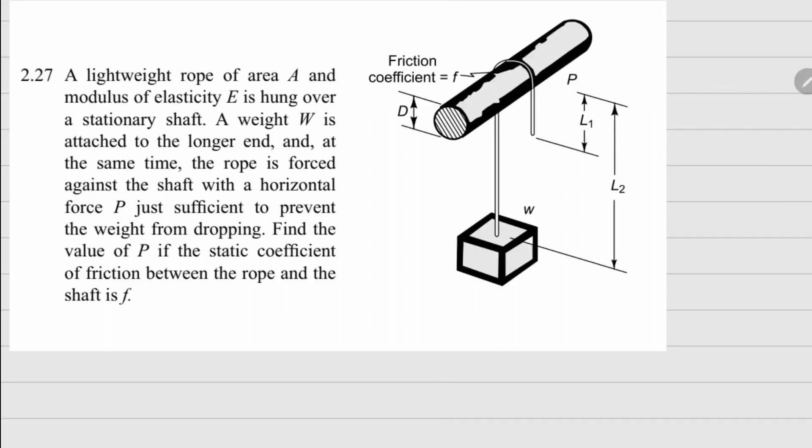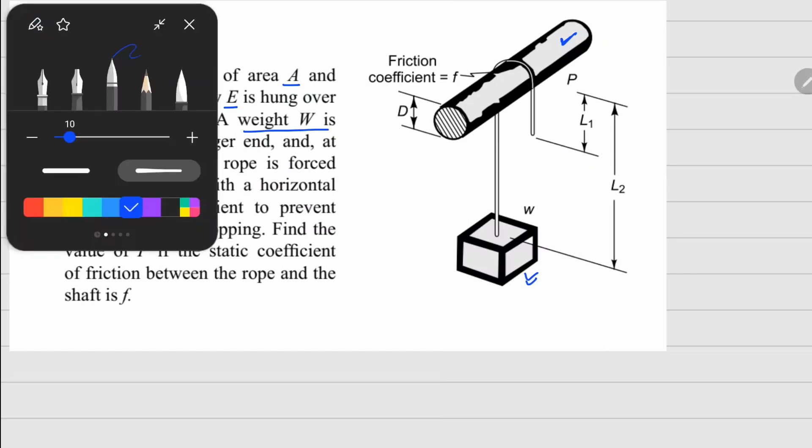This one is problem 2.27. There is a lightweight rope of cross-section area A and elastic modulus E which is hung over a stationary shaft. There is a weight W attached to the longer side of the rope.